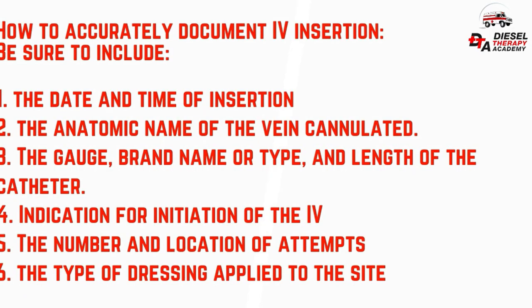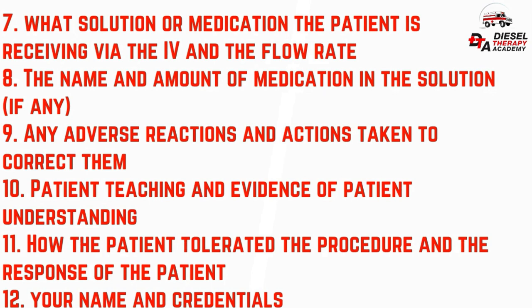To accurately document IV insertion, be sure to include: the date and time of insertion; the anatomic name of the vein cannulated; the gauge, brand name or type, and length of the catheter; indication for initiation of the IV; the number and location of attempts; the type of dressing applied to the site; what solution or medication the patient is receiving via the IV and the flow rate; the name and amount of medication in the solution, if any; any adverse reactions and actions taken to correct them; patient teaching and evidence of patient understanding; how the patient tolerated the procedure and their response; and your name and credentials.